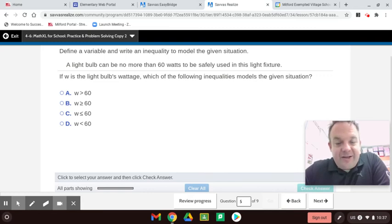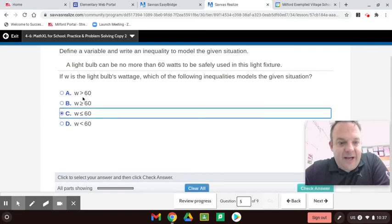So it would be less than or equal to 60. If W is the light bulb's wattage, which of the following inequality models the given situation? So the wattage has to be less than, this symbol is less than or equal to 60. I'll read these to you. This is W is greater than 60. This is W is greater than or equal to 60. This is W is less than or equal to 60. And this is W is less than 60.